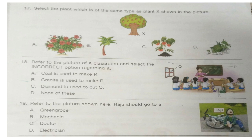Question 19. Refer to the picture shown here. Raju should go to a: A. Green Cross, B. Mechanic, C. Doctor, and D. Electrician.